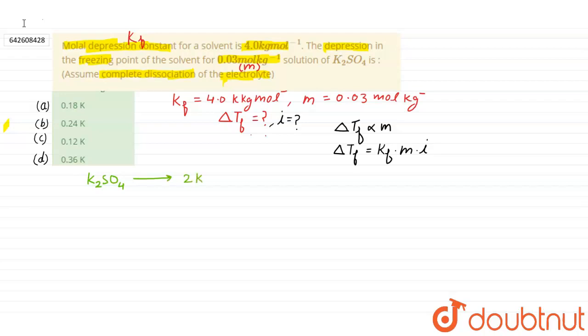dissociate and it will give 2K+ ions and 1 sulfate ion. 1 mol K2SO4 according to stoichiometry of this reaction gives 2 mol potassium ion and 1 mol sulfate ion.